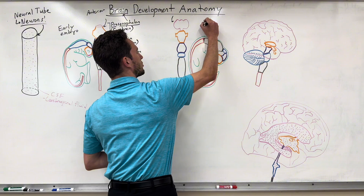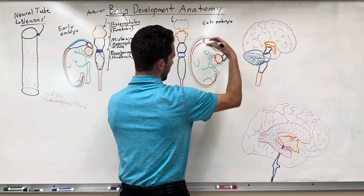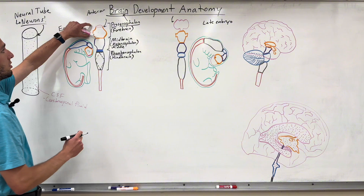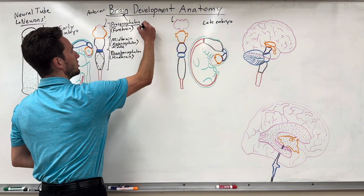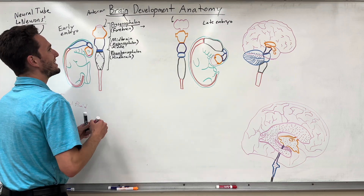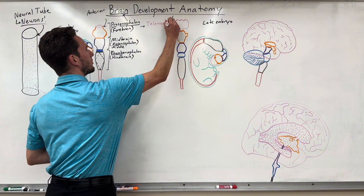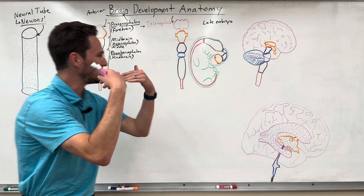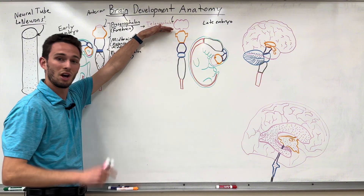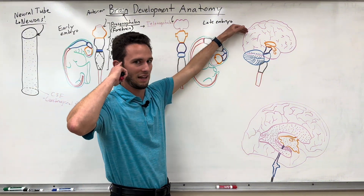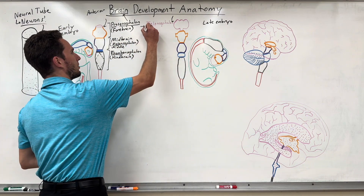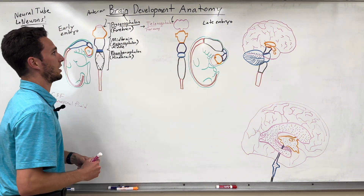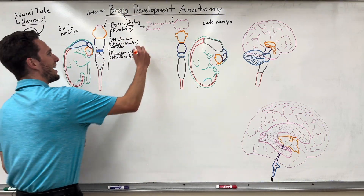As we go into later development — the late embryo, around maybe 10 to 12 weeks — we now have five differentiated structures. The prosencephalon has differentiated into two different tissues. The first is the telencephalon. 'Telos' or 'tele' means far off, and I want you to remember it's far and away the most complex, because the cerebrum has a lot of high-level complex functions. Moving posteriorly, we now have the diencephalon.